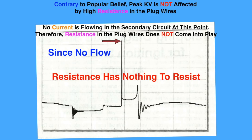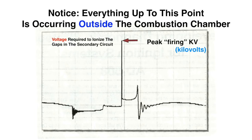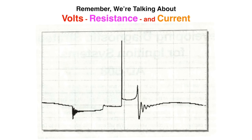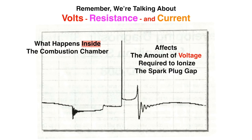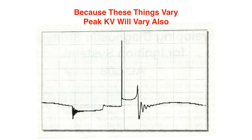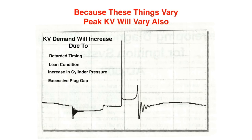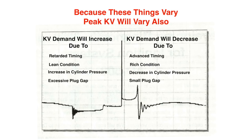Again, notice that everything up to this point is occurring outside of the combustion chamber. We're talking about volts, resistance, and current. What happens inside the combustion chamber affects the amount of voltage required to ionize the spark plug gap. Because these things vary, peak kV will also vary. KV demand will increase due to retarded timing, lean conditions, increased cylinder pressures, and a wider spark plug gap.